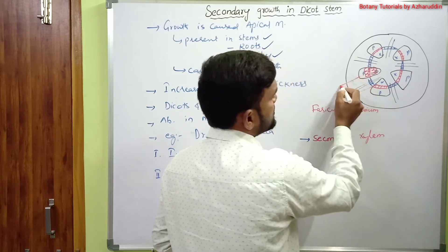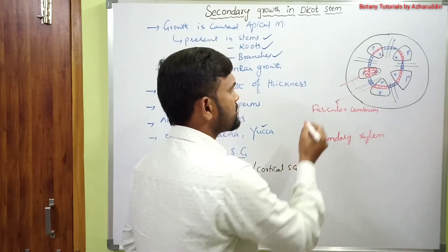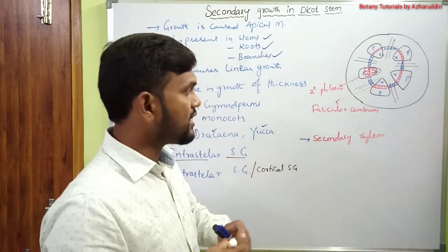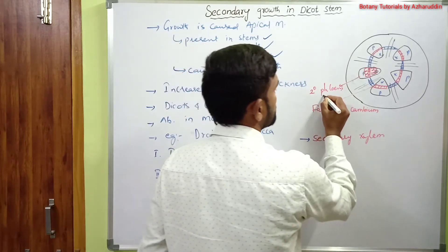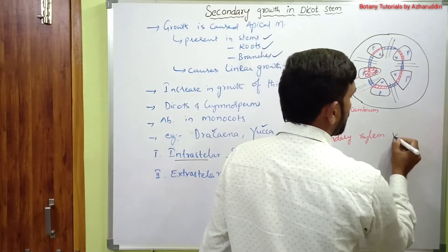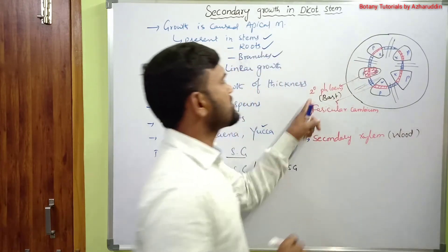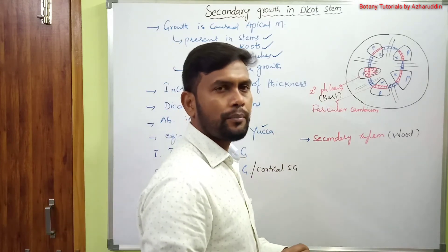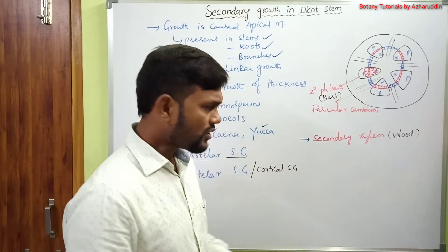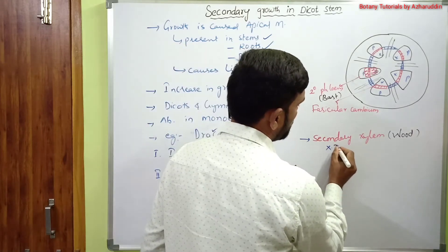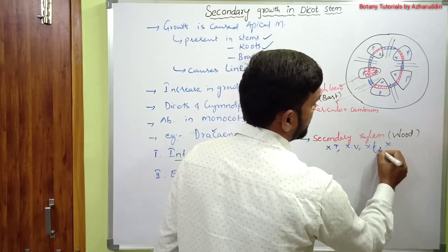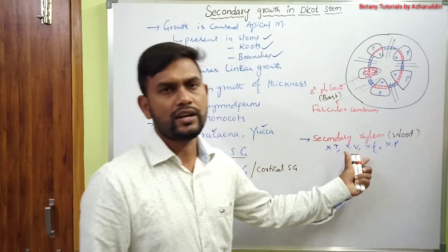The cells produced towards the outside differentiate to form secondary phloem, which is also called bast. The secondary xylem is called wood. Secondary phloem consists of sieve tubes, companion cells, phloem parenchyma, and phloem fibers. Secondary xylem contains xylem tracheids, xylem vessels, xylem fibers, and xylem parenchyma.